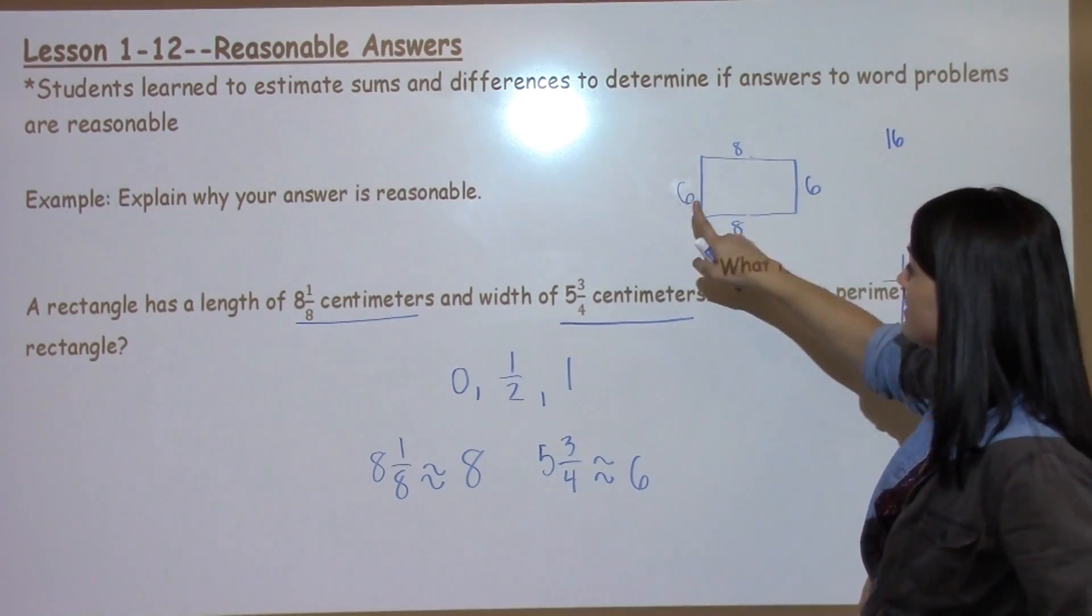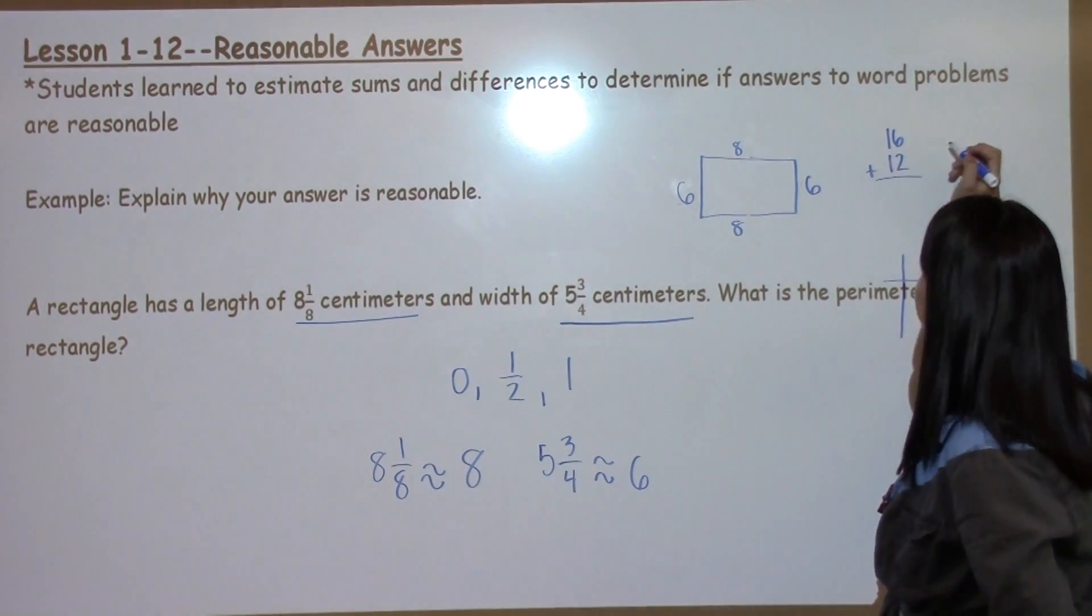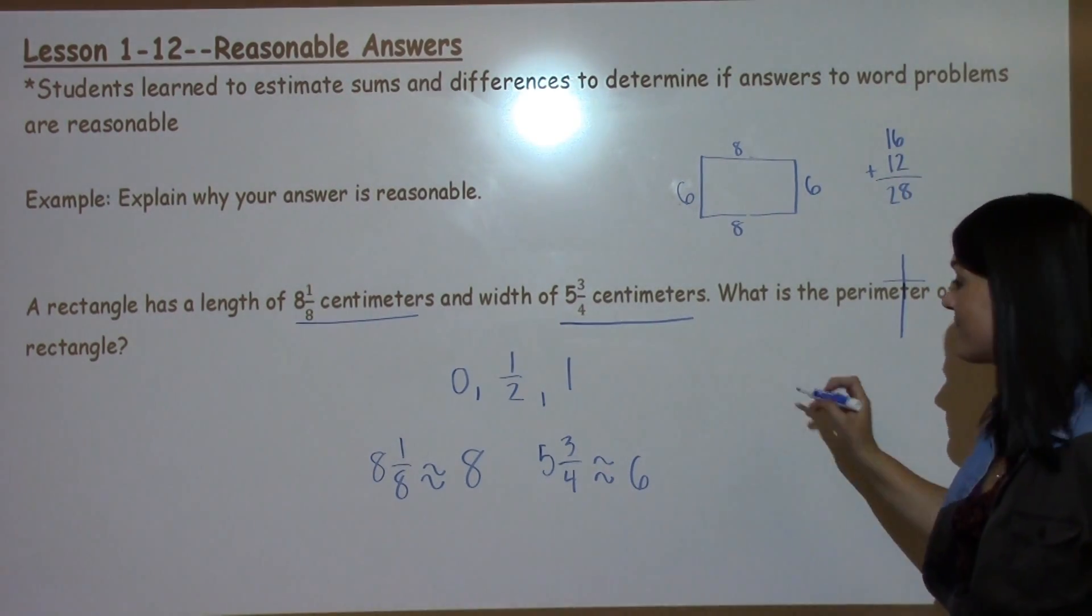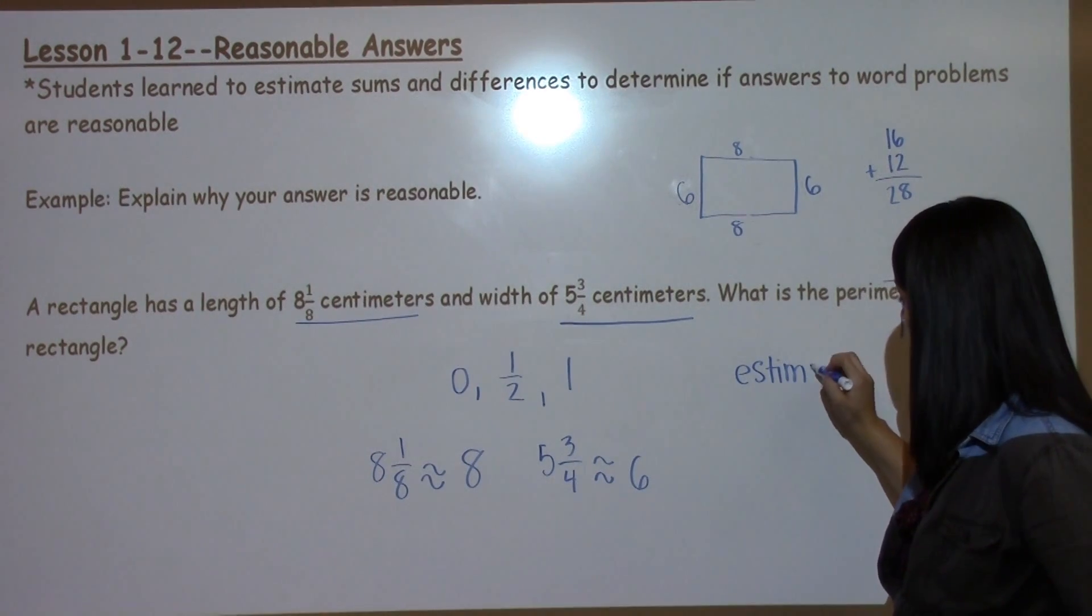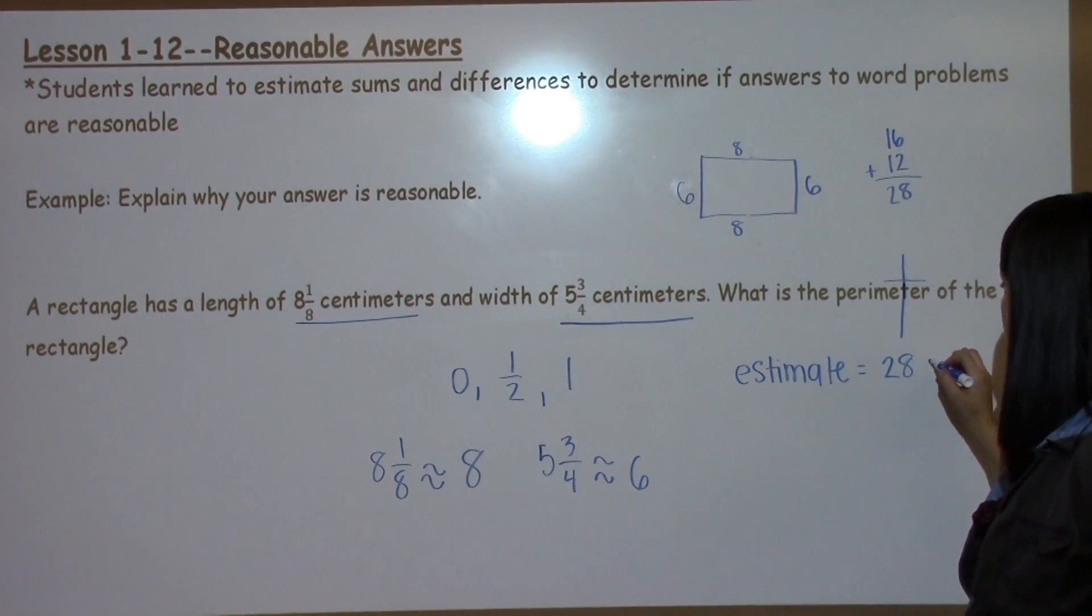And 6 plus 6, which is 12, to find my final answer. 6 plus 2 is 8, 1 plus 1 is 2. So my final estimate is 28 centimeters.